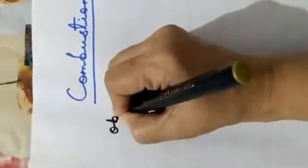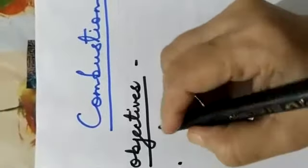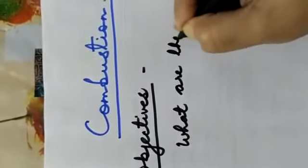The ignition temperature is the minimum temperature at which a substance catches fire. Now we will study about the different types of combustion. At the end of this session we will be able to answer: what are the different types of combustion?